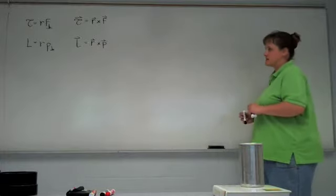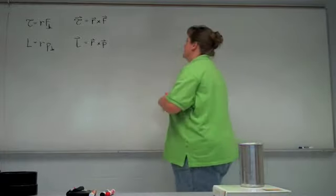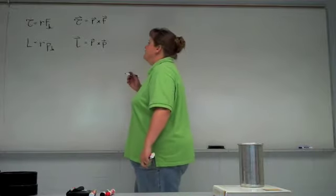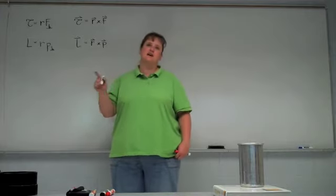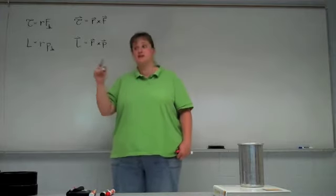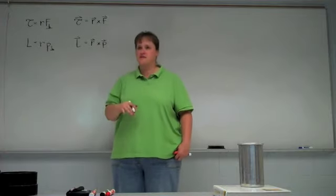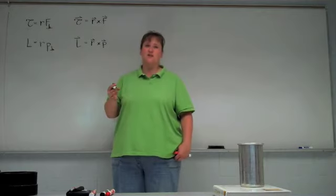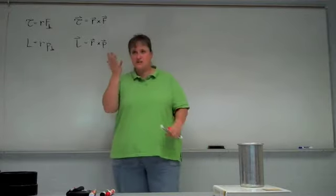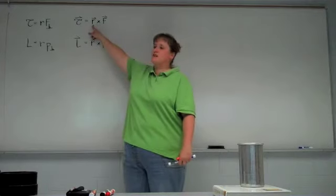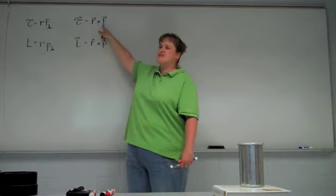There are two ways to compute the cross product. One is to memorize what i cross i is, i cross j, i cross k, j cross j, j cross i, j cross k, and all the options — which isn't too hard if you understand the right-hand rule. Using your right hand, if you put your index finger in the direction of the first vector in the cross product and make it so the second vector points out of your palm, then your thumb will be the result.